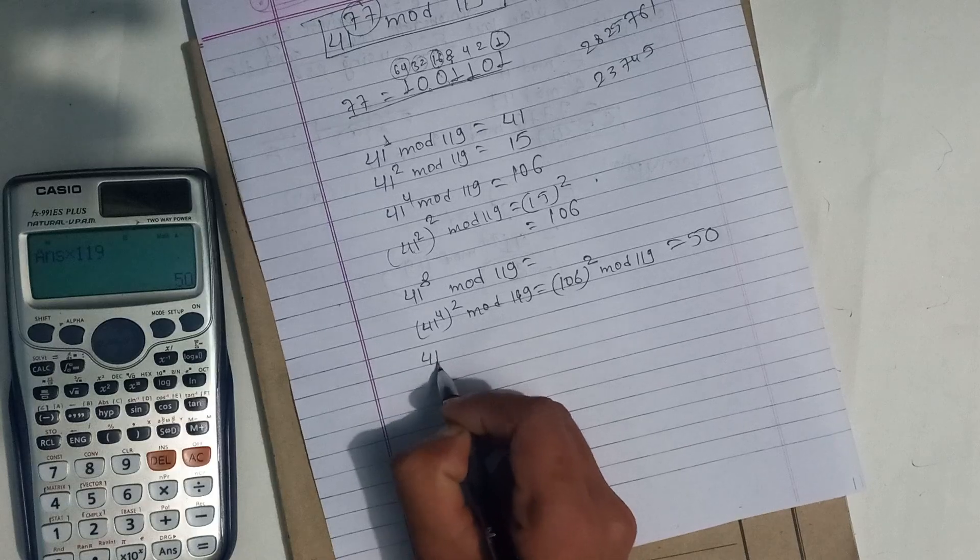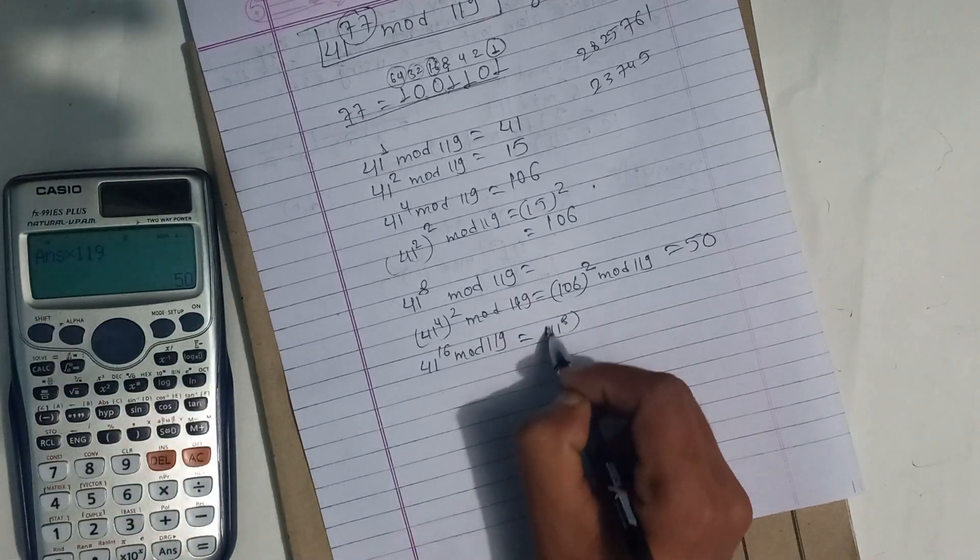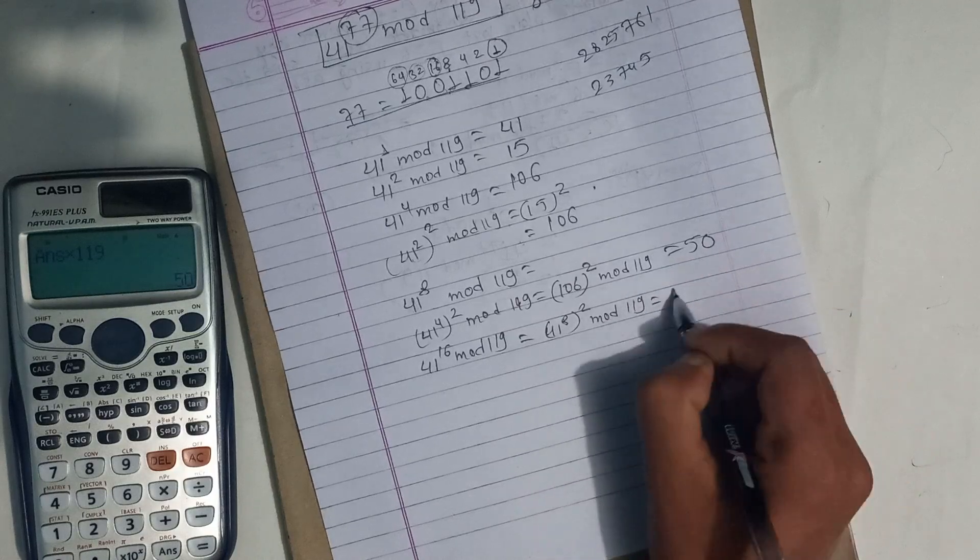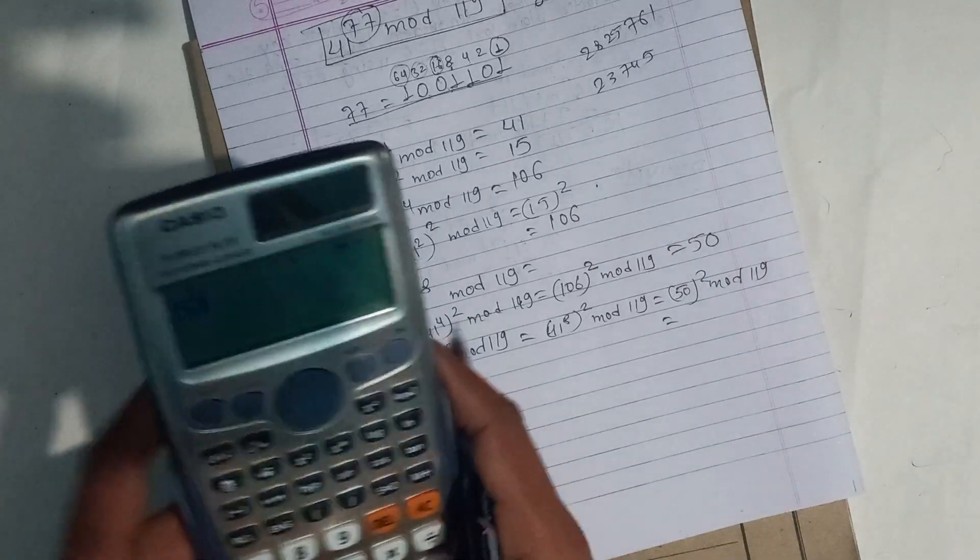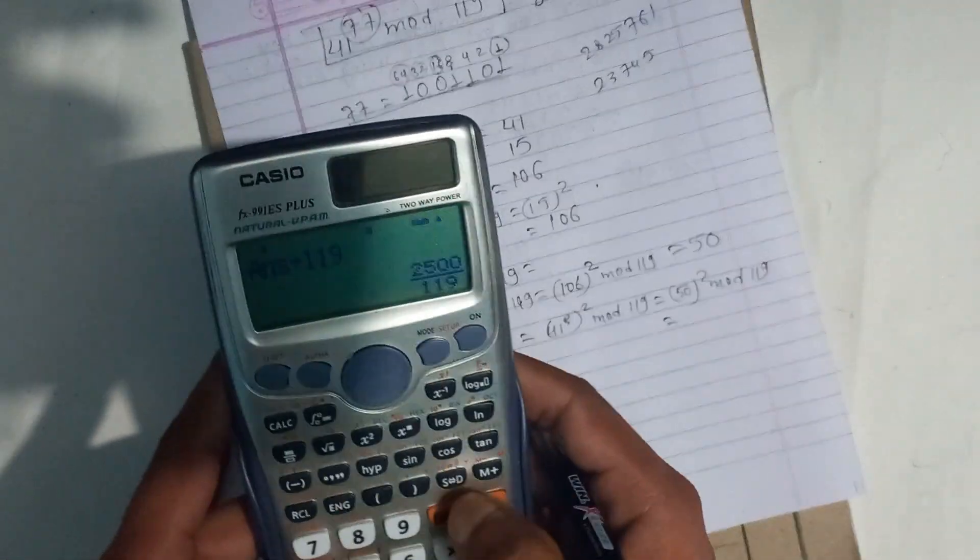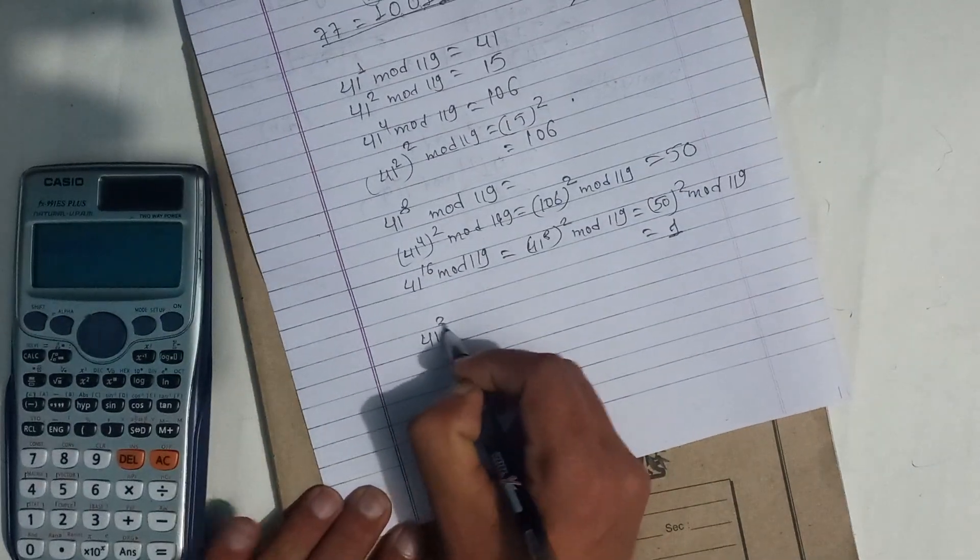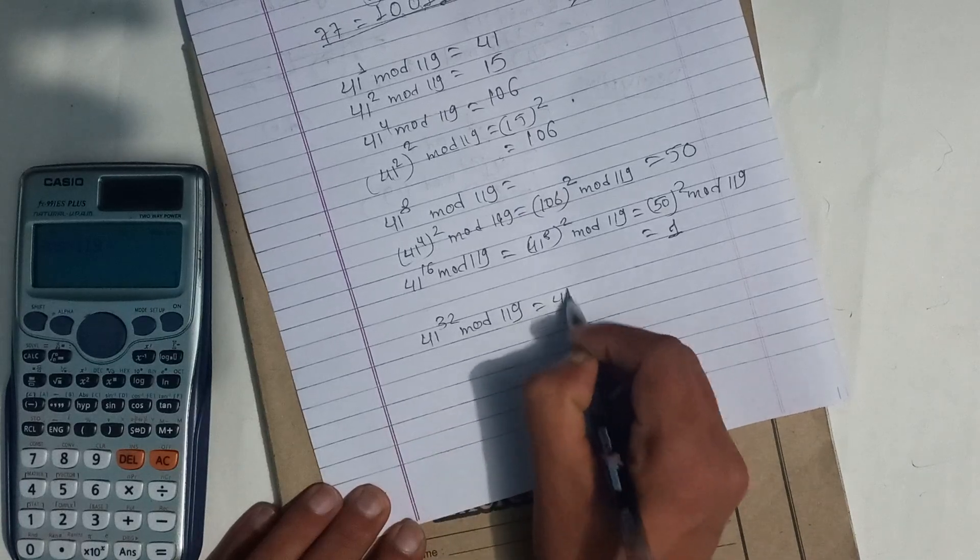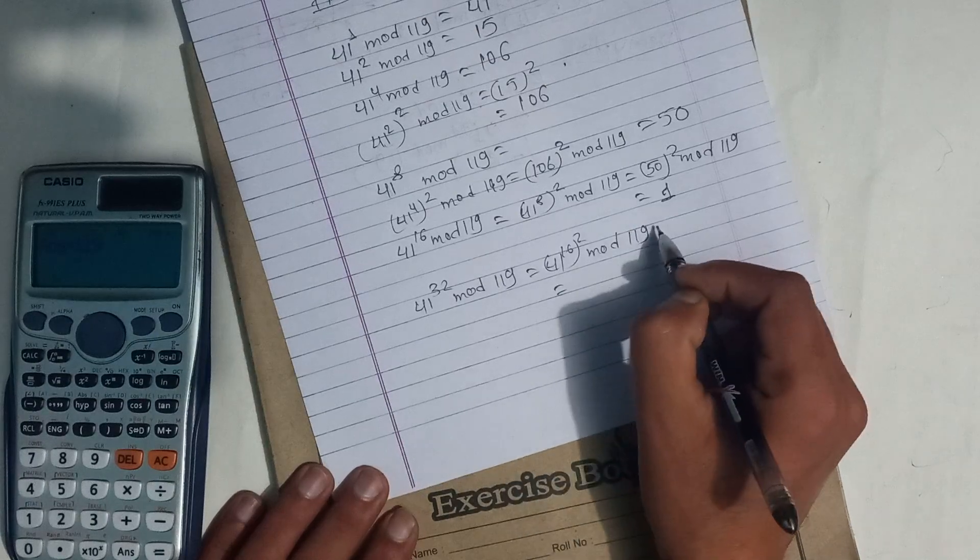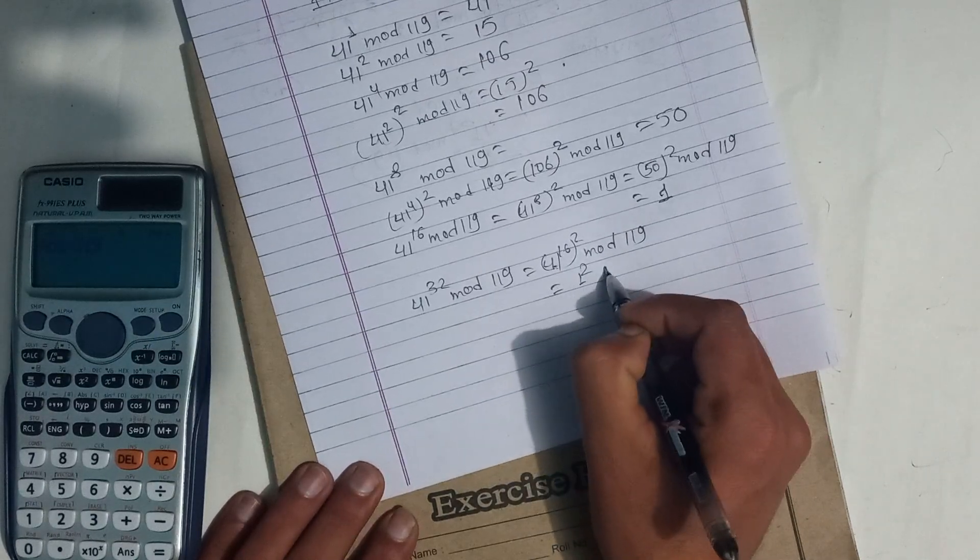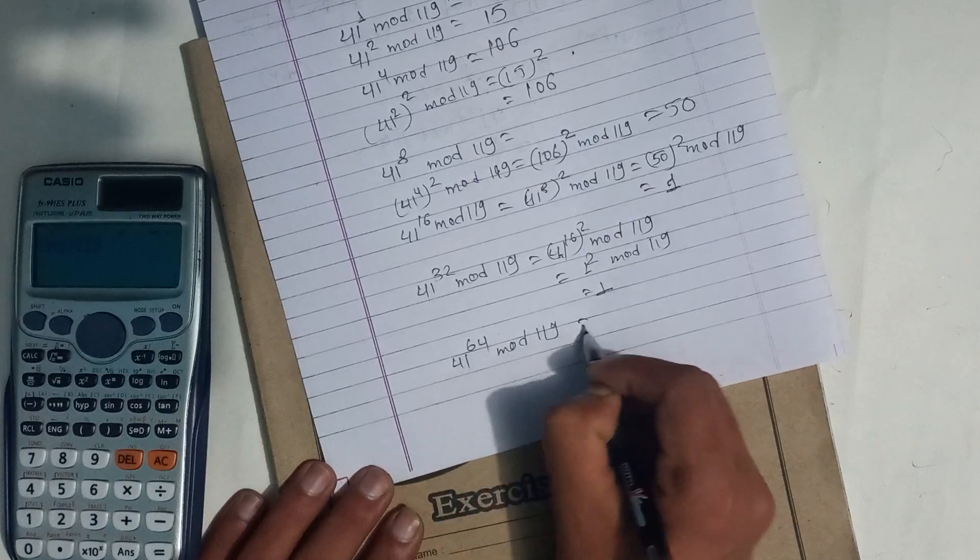So let's do this: for 41 power 16 mod 119, we compute 41 to power 8 squared mod 119, which is 50 squared mod 119. 50 squared divided by 119 gives us minus 21 into 119, perfect, which equals 1. Now 41 to power 32 mod 119, which is 41 to power 16 squared mod 119, also equals 1. Similarly, 41 to power 64 mod 119 also equals 1.